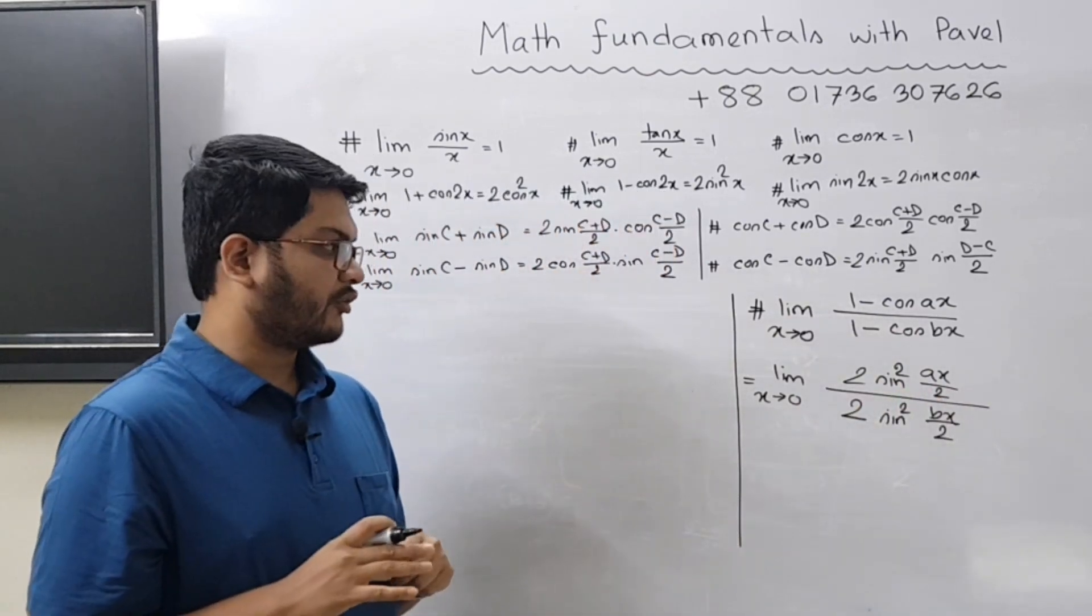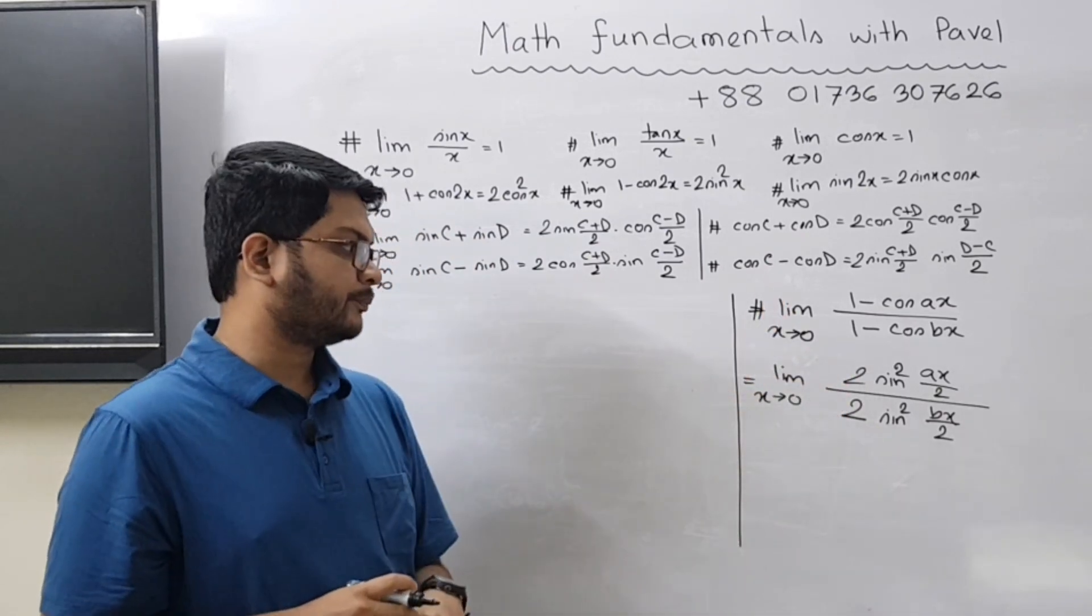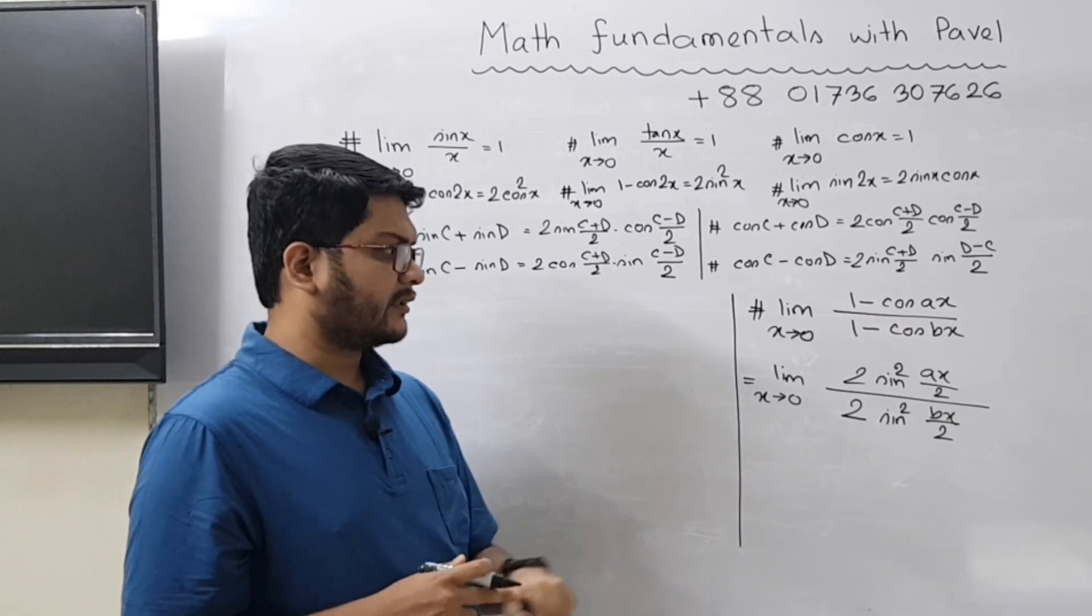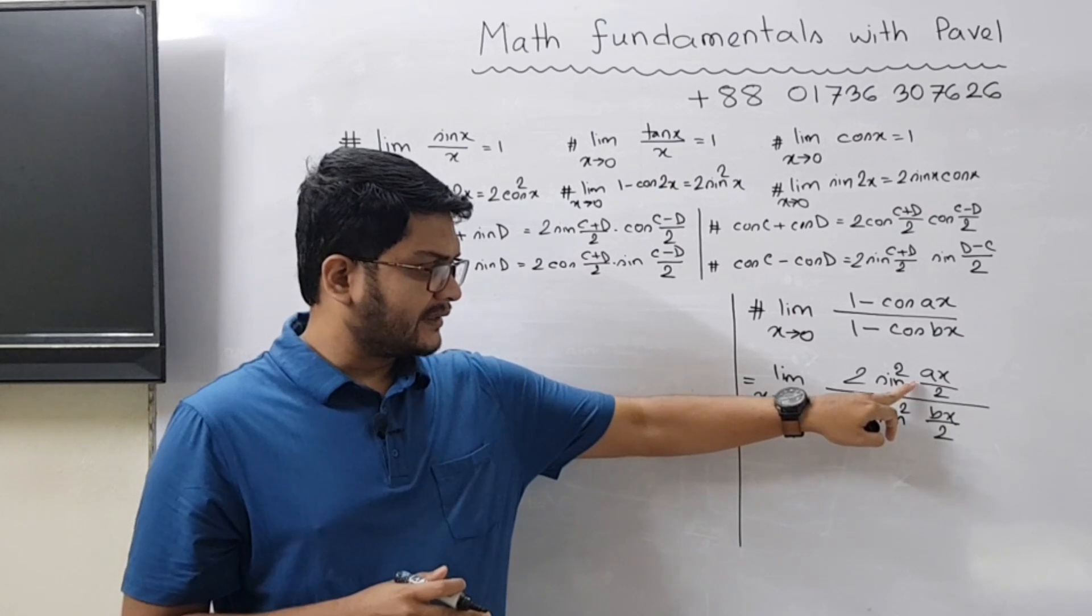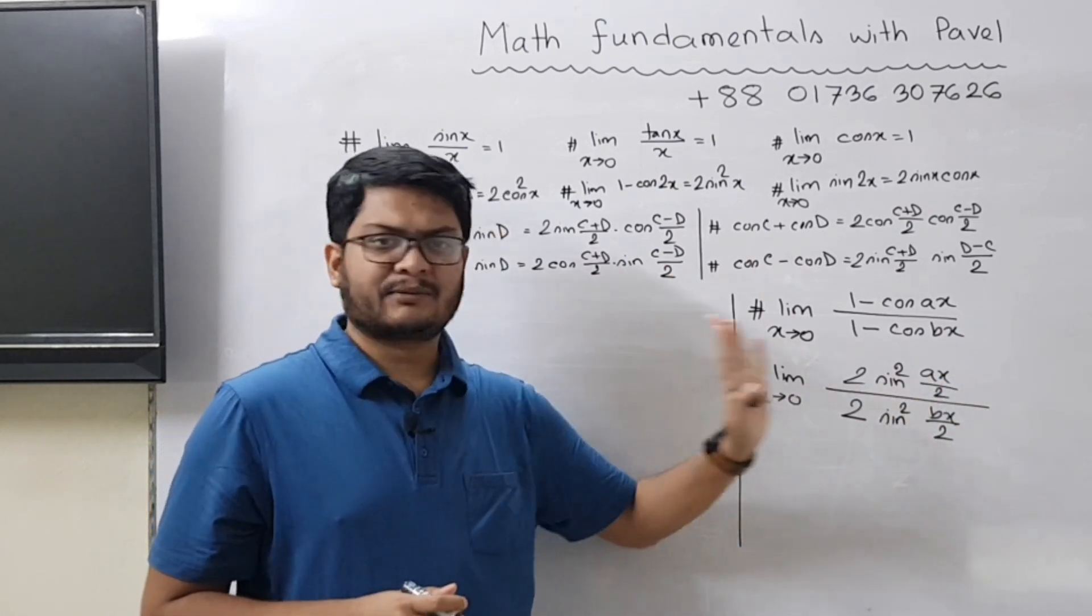Using the same concept we can write here 2 sin² (bx/2). So the first thing we are done. Now this 2 and this 2 they will be cancelled out. Now we need to adjust the theta.